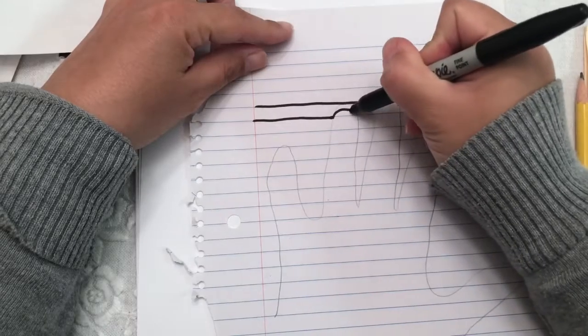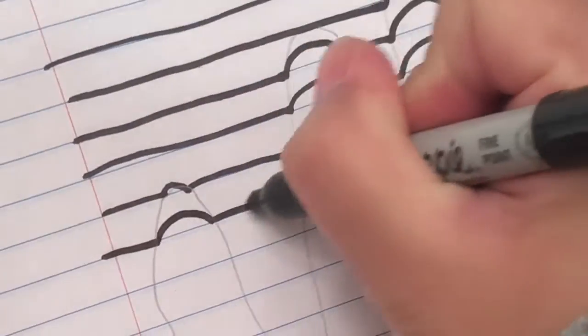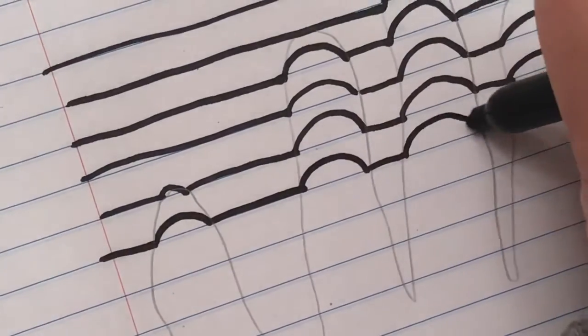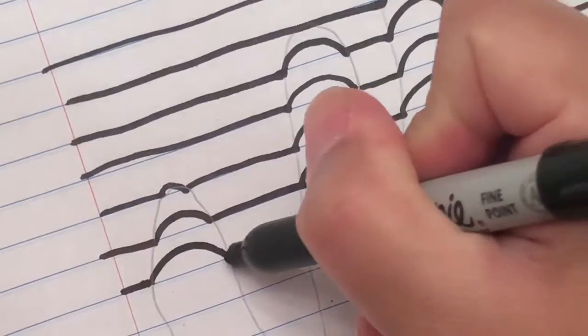You're going to trace over the regular blue lines of the paper in the background areas. Then when it bumps into the fingers, you're going to use that curved C shape.